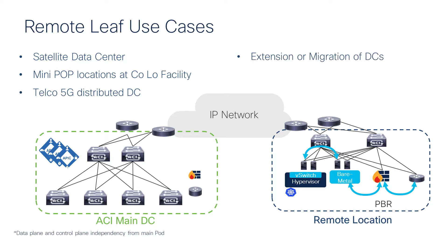You may also have use cases regarding the extension or migration of your data center. In those cases, you build L2/L3 connectivity using remote leaf, and then you can use that to migrate your workload across remote locations and the main data center. You may also have use cases for disaster recovery. Remote leaf provides redundancy in terms of control plane and data plane, so your traffic forwarding will continue to work if you lose a connection to the main data center. Of course, when you lose the connection from the main data center, the remote leaf cannot be provisioned and you cannot see stats or operate it remotely — but traffic forwarding works just fine.